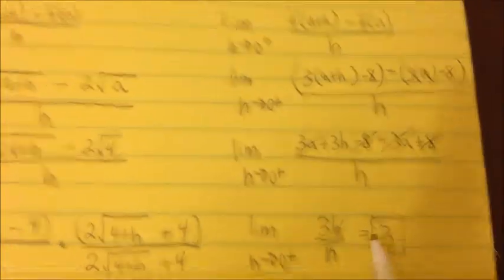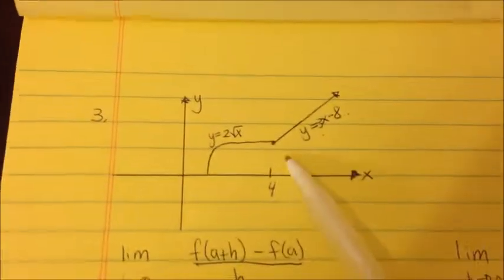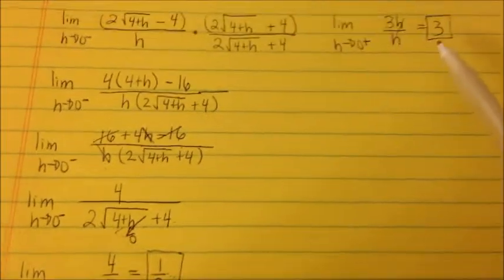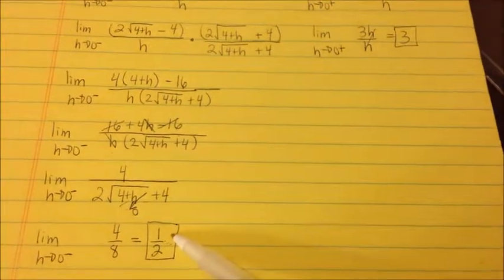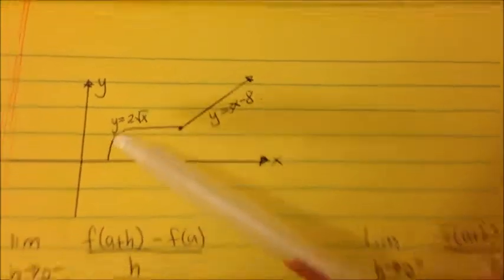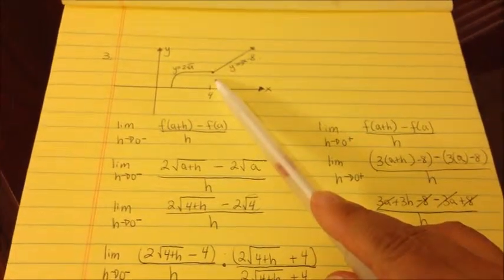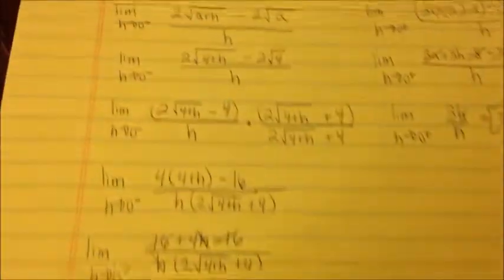So is it differentiable at x equals 4? The right-hand side slope is 3, and the left-hand side slope is 1/2. Since both numbers are not the same, the function is not differentiable at x equals 4. It is differentiable everywhere else, just not at that point where the two pieces meet. That should help you with your homework — you should now be able to continue.